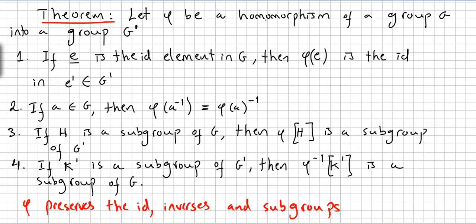Theorem. Let Phi be a homomorphism of a group G into a group G'. Property one: if E is the identity element in G, then Phi of the identity is the identity E' in G'.